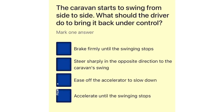The caravan starts to swing from side to side. What should the driver do to bring it back under control? Brake firmly until the swinging stops. Steer sharply in the opposite direction to the caravan's swing. Ease off the accelerator to slow down. Accelerate until the swinging stops.